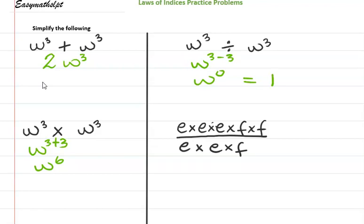Now let's simplify this by cancelling or dividing like terms. e divided by e is one, e divided by e is one, and there are no more e's in the denominator to cancel with e's in the numerator. Then f divided by f is one. Multiplying through: 1 × 1 × e × e × f gives us ef in our numerator, divided by 1 × 1 × 1, which is still ef.